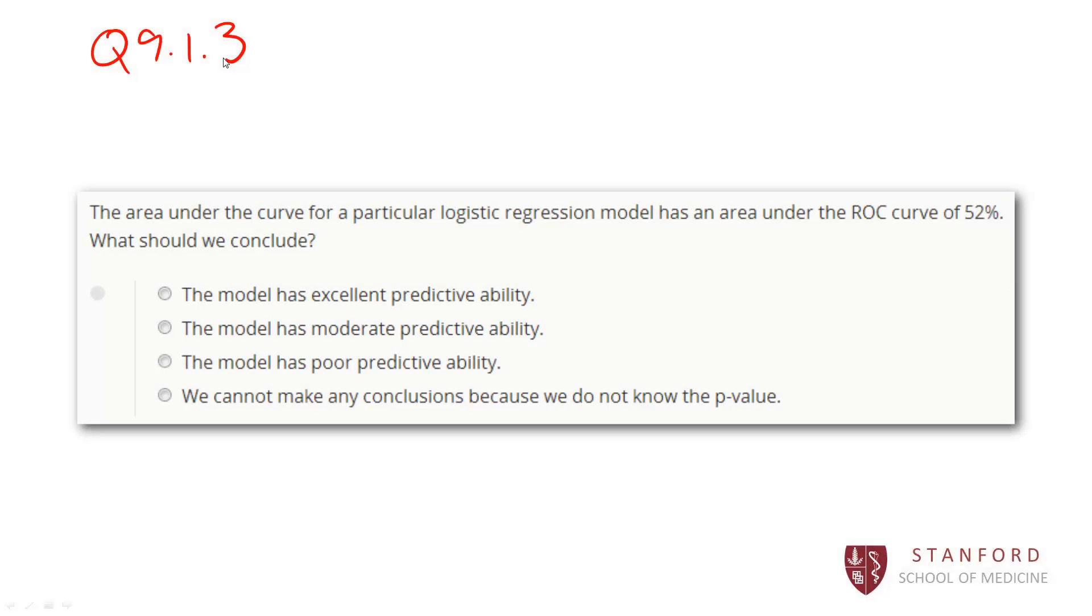An ROC curve with an area under the curve of 50% has absolutely no predictive ability, no better than chance. So an ROC curve with an area under the curve of 52% is bad. So C is correct. The model has poor predictive ability.